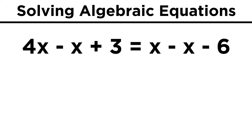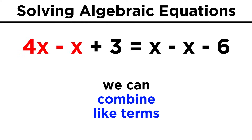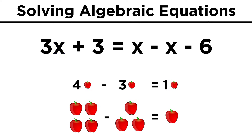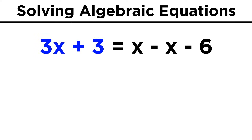If we do that, we get 4x - x + 3 on the left, and when we see something like this, we can combine like terms. We have one x term and another x term, so we can combine them to get 3x, since four minus one equals three. The x doesn't go away — it's the common term that allows us to subtract, just the way four apples minus three apples equals one apple, not just the number one. So this leaves us with 3x + 3. On the right, the x will go away because x - x = 0.